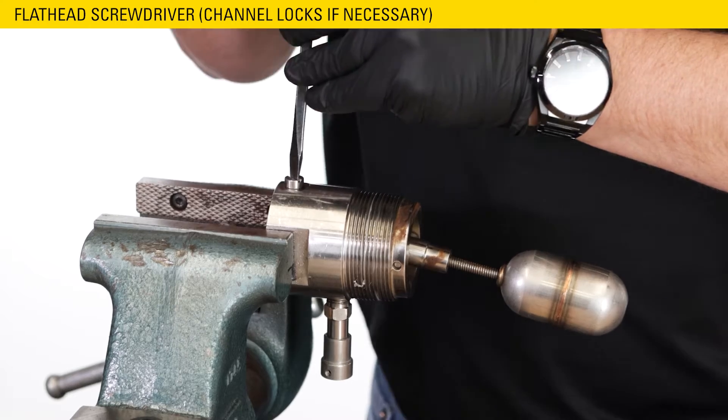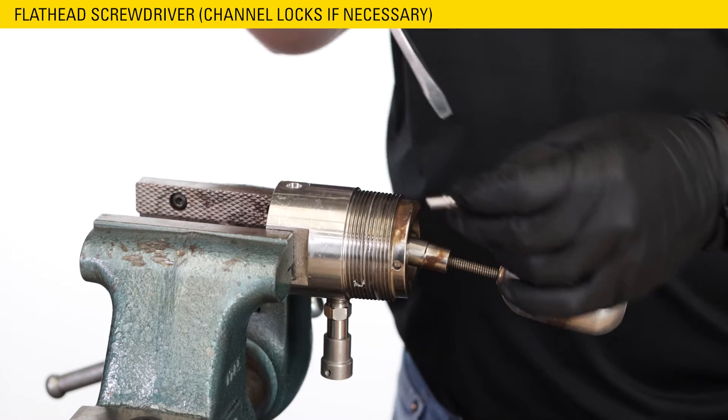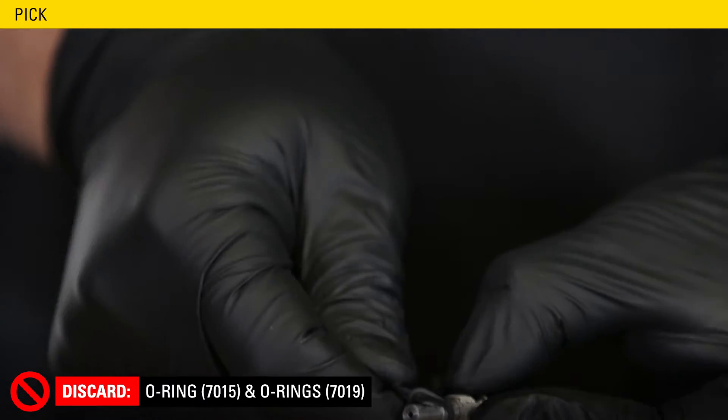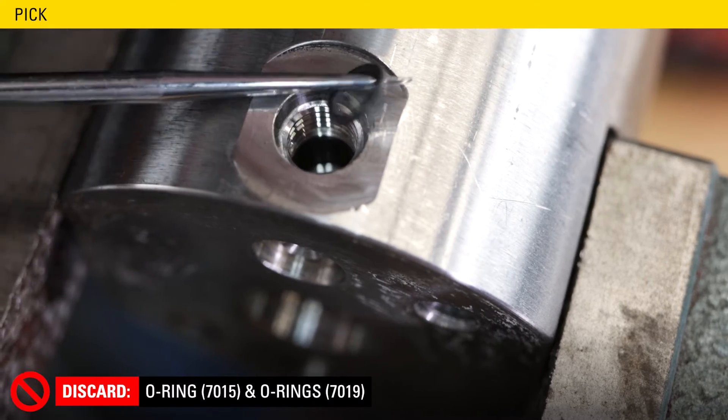With the switch secured in the vise, remove the second seat. Each seat has two O-rings on it to discard. The bottom one may be stuck in the body, so use a straight pick to get it out.